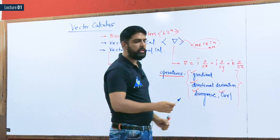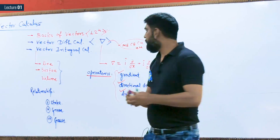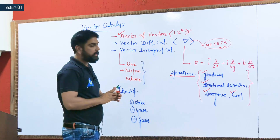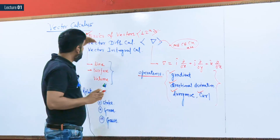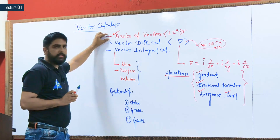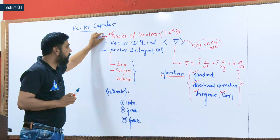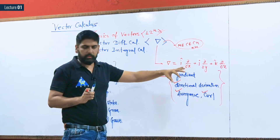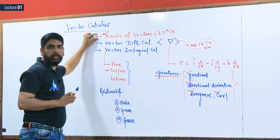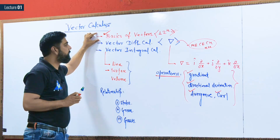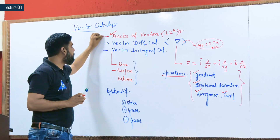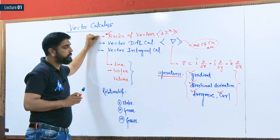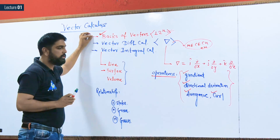So this is the syllabus — the introduction to vector calculus. We start with the basics of vectors, shown in red. After learning the basics, we apply them to calculate gradient, directional derivative, divergence, and curl, because these operations use the vector products. Once we learn the products, we apply the del operator with scalar and vector point functions to get gradient, directional derivative, divergence, and curl.